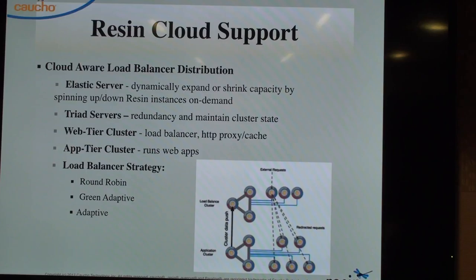In our load balancer strategy, we have round-robin, a green adaptive mode, and a CPU adaptive mode. The triad servers are mainly for redundancy and maintaining cluster state.